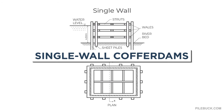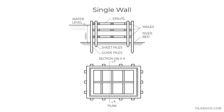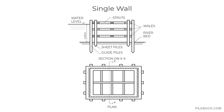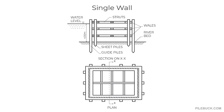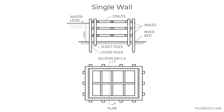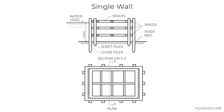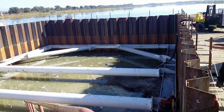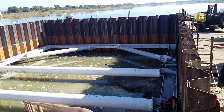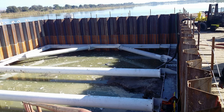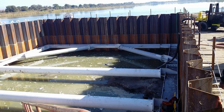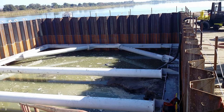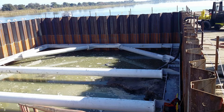Single wall coffer dams are used for small areas with a depth of water typically between 4.5 to 6 meters. Guide piles made of timber are driven deep into the riverbed, below the firm ground beneath it. The velocity of the water flow determines the center-to-center spacing of the guide piles. Whales, also known as longitudinal runners, are bolted to the guide piles. Steel or wooden sheet piles are driven along the whales and then bolted to them, and the sheets on both faces are braced using struts.